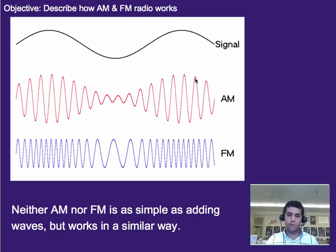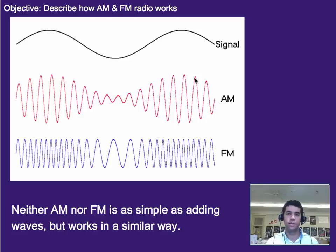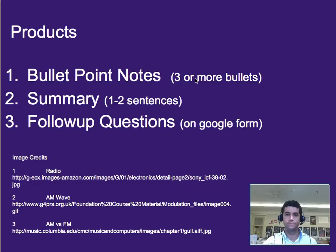Neither AM nor FM is as simple as just adding the waves, but it works in a similar way — it's more complicated than just adding amplitudes. But with the electronics we have, we're able to do it fairly easily. That's it — three or more bullet points worth of notes, a one to two sentence summary, and please do your follow-up questions on Google Forms.